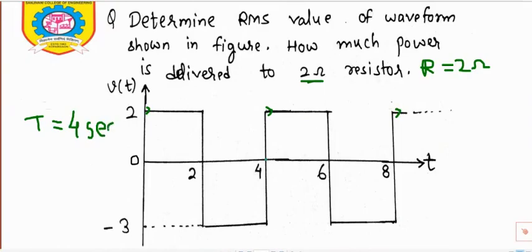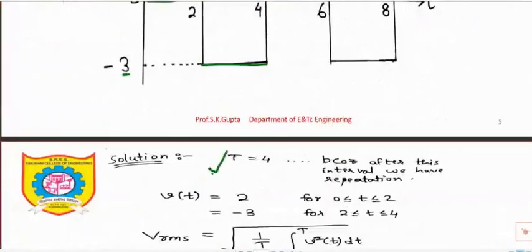Once you have found the period, the next step is to find the equation of V(t). Between 0 to 2 seconds, V(t) = 2. And from 2 to 4 seconds, V(t) = −3. So I have written the time period and the piecewise V(t): from 0 to 2, V(t) = 2, and from 2 to 4, V(t) = −3, as read from the waveform.